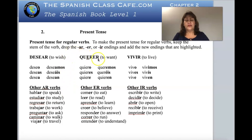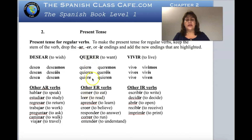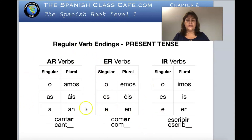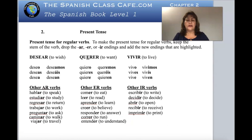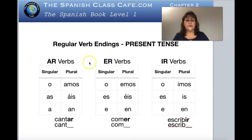Now let's go to querer — an -er verb. The same concept applies: you find verbs ending in -er in the dictionary, the second biggest group. Take the -er out and add the conjugation endings for -er verbs. For comer, you take the -er out and start adding the -er endings. Any time you find a regular verb ending in -er, take the ending out and substitute the -er verb endings.